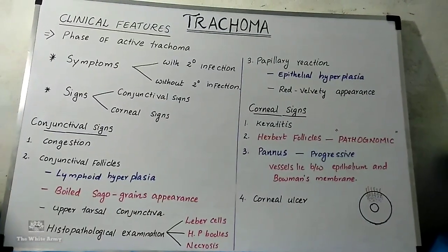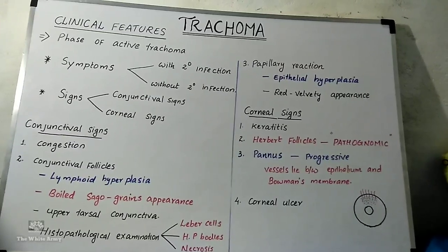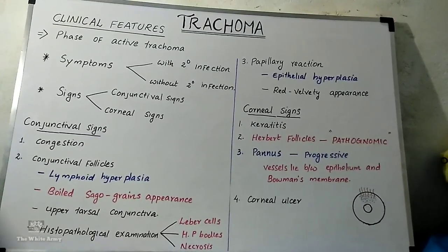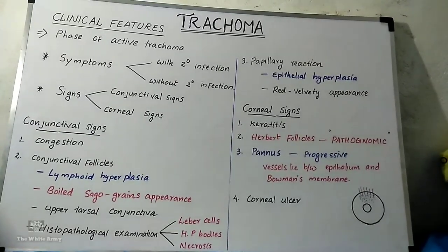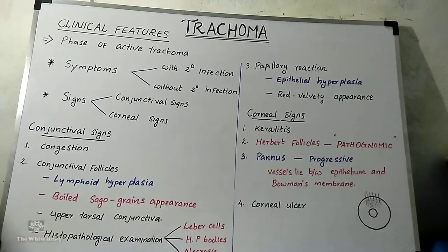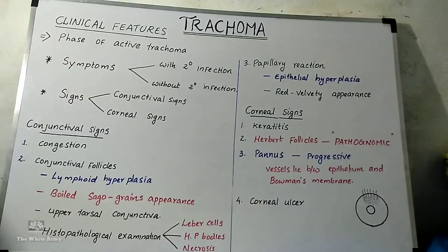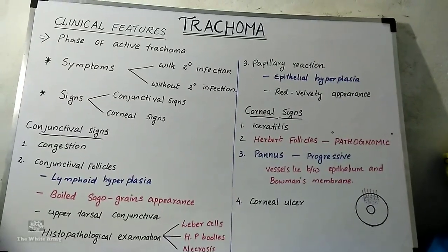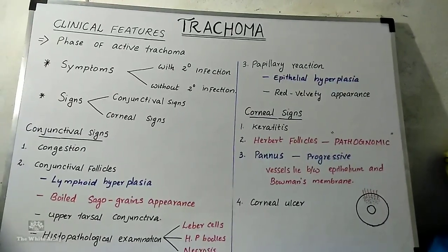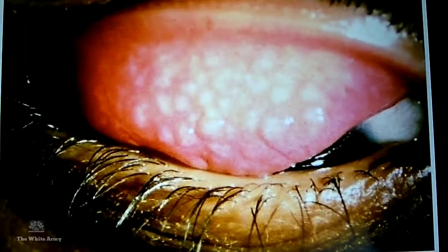Presence of Leber cells and necrosis helps differentiate trachoma follicles from follicles of other forms of follicular conjunctivitis. There is papillary reaction due to epithelial hyperplasia, giving the upper tarsal conjunctiva a red velvety appearance. Corneal signs include superficial keratitis in the upper part. Herbert follicles are typical follicles in the limbal area and are pathognomonic for trachoma. There is pannus formation due to infiltration of the cornea with vascularization; vessels lie between the epithelium and Bowman's membrane. In active trachoma, the pannus is progressive, meaning infiltration is ahead of vascularization. In advanced stages, corneal ulcer may form.